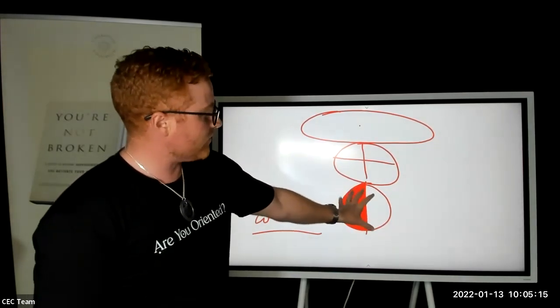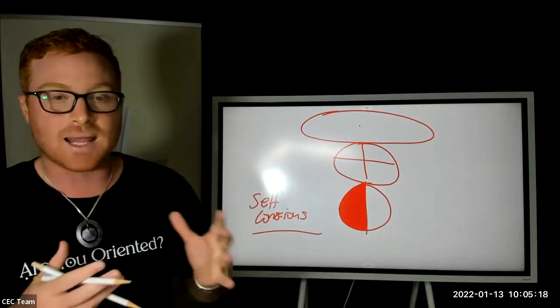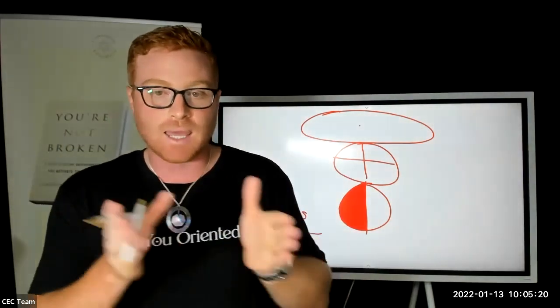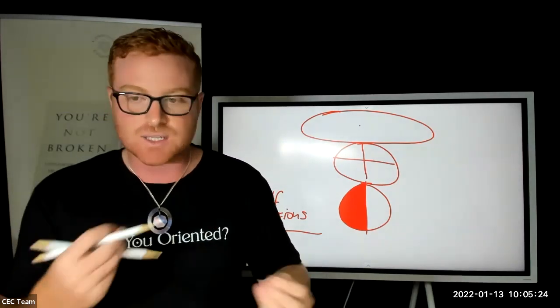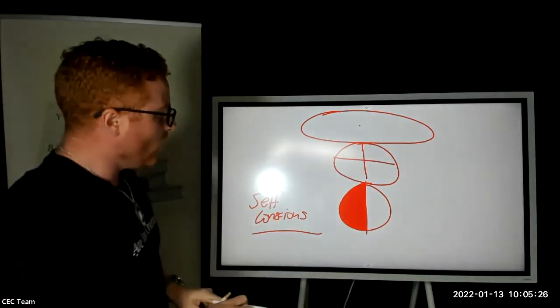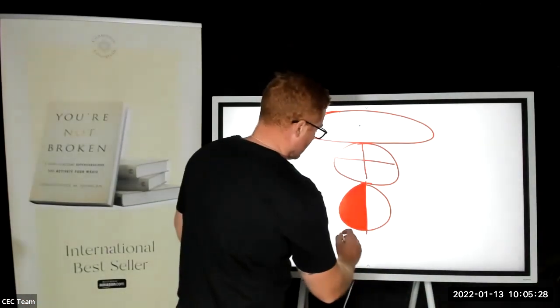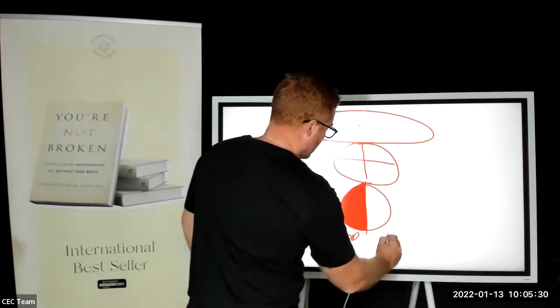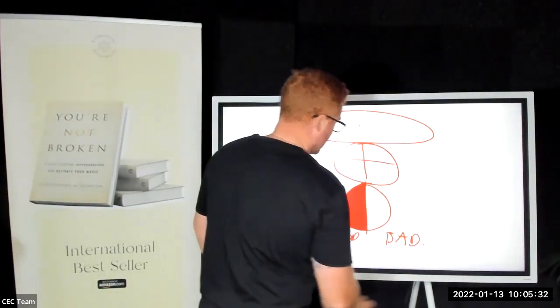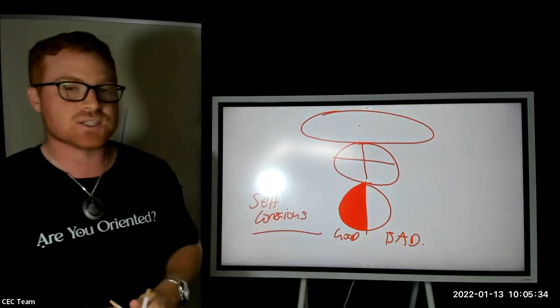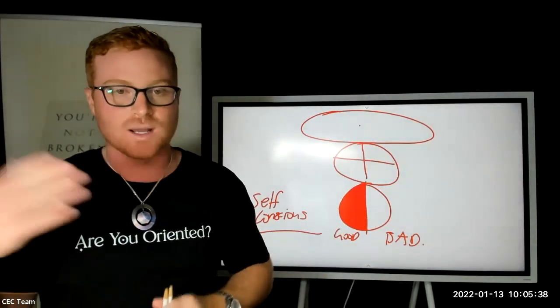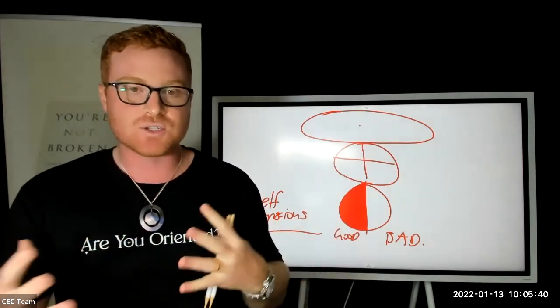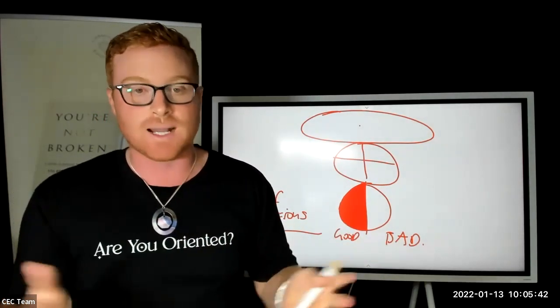This diagram comes from Simone Wright, who I believe is an absolutely amazing intuitive and teacher, and you guys should definitely check her out. So the self-conscious here is designed, shown visually by a polarity, a black and a white side or a dark and a light side. The self-conscious always sees a good and a bad.